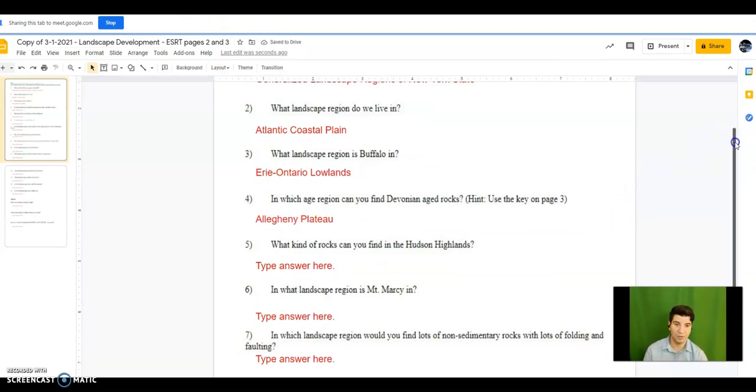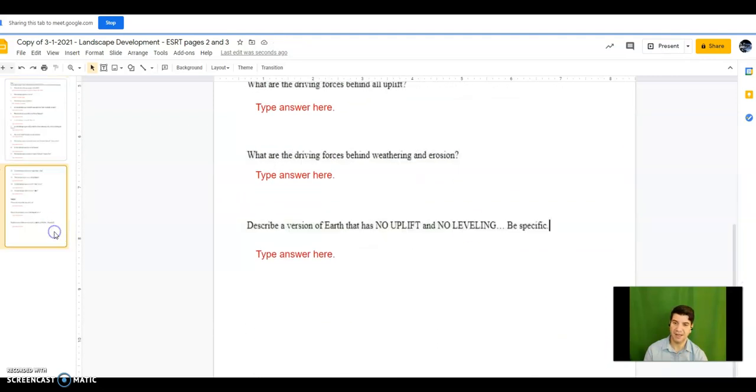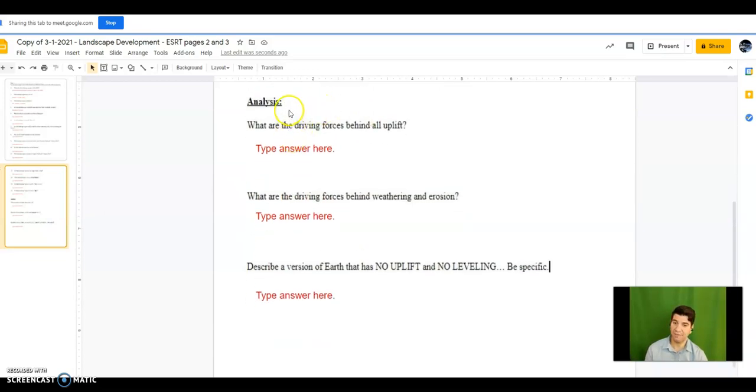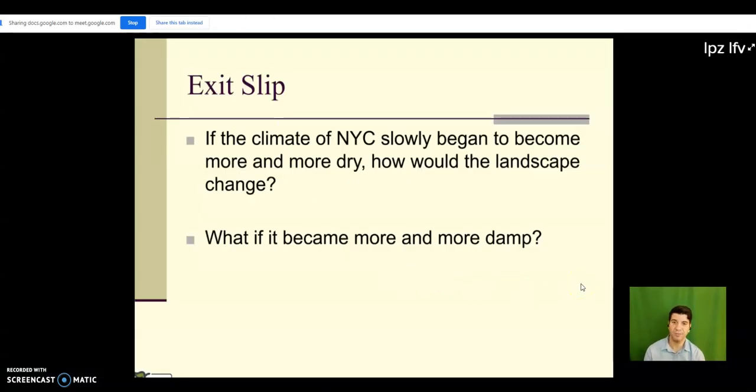All right, pretty simple. So what I want you to do is wrap up questions five through fifteen today. We've got about ten more questions, this shouldn't take you that long. And then you have three analysis questions, I'm especially looking forward to see what you write for this last one: describe a version of earth that has no uplift and no leveling. All right, we do have our exit slip and I'd like you to answer this now. If the climate in New York City slowly began to become more and more dry, how would our landscape change and what would happen if it became more damp? All right, when you're done with that you guys can go and begin work on the assignment. And otherwise I'll be hanging out here for the next 20 minutes or so if you guys need any assistance. All right, take care.